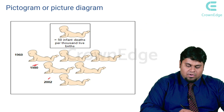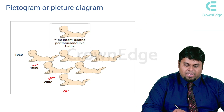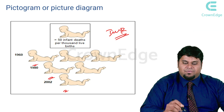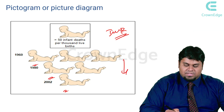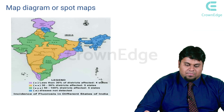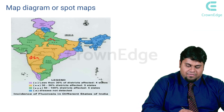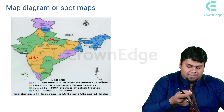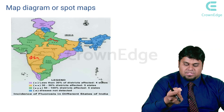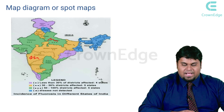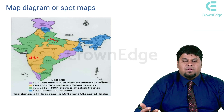A pictogram uses representative images for a particular unit — for example, to show infant mortality rate, a baby image is used where each unit represents 50 infant deaths. From the 1960s to 2002, we can see a gradual decrease in infant mortality through this pictogram. A map diagram uses differentiated colors for different regions — for example, purple shows less than 30% of districts affected, orange shows 30–50%, green shows 50–100%, and blue indicates diseases not detected. This converts tabular data into a meaningful geographic image.